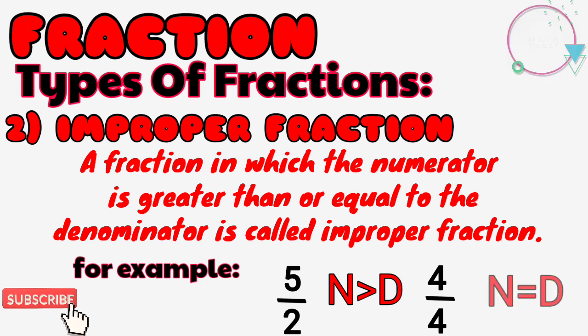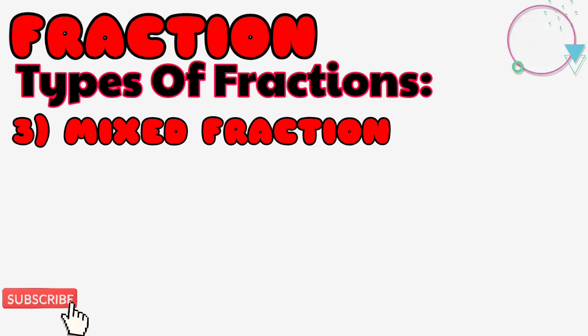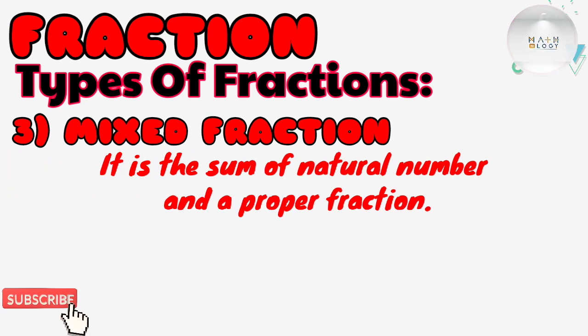Here the numerator is equal to the denominator, that's why it is known as an improper fraction. Third and last: mixed fraction. A mixed fraction is also called a mixed number. It is the sum of a natural number and a proper fraction.